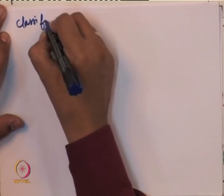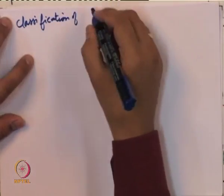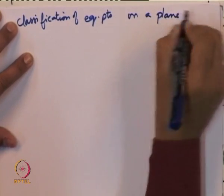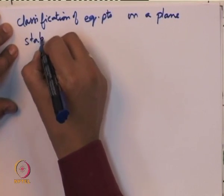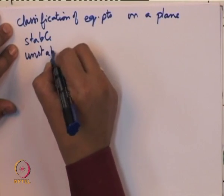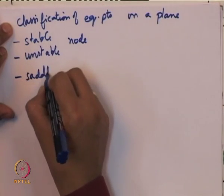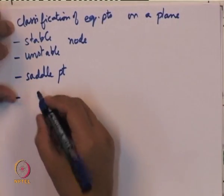This turns out to be related to a very celebrated result familiar to all — the relation between faces, edges, and vertices of any polyhedra. Coming back to the classification of equilibrium points on a plane: we already saw stable and unstable nodes, saddle points, and centers.